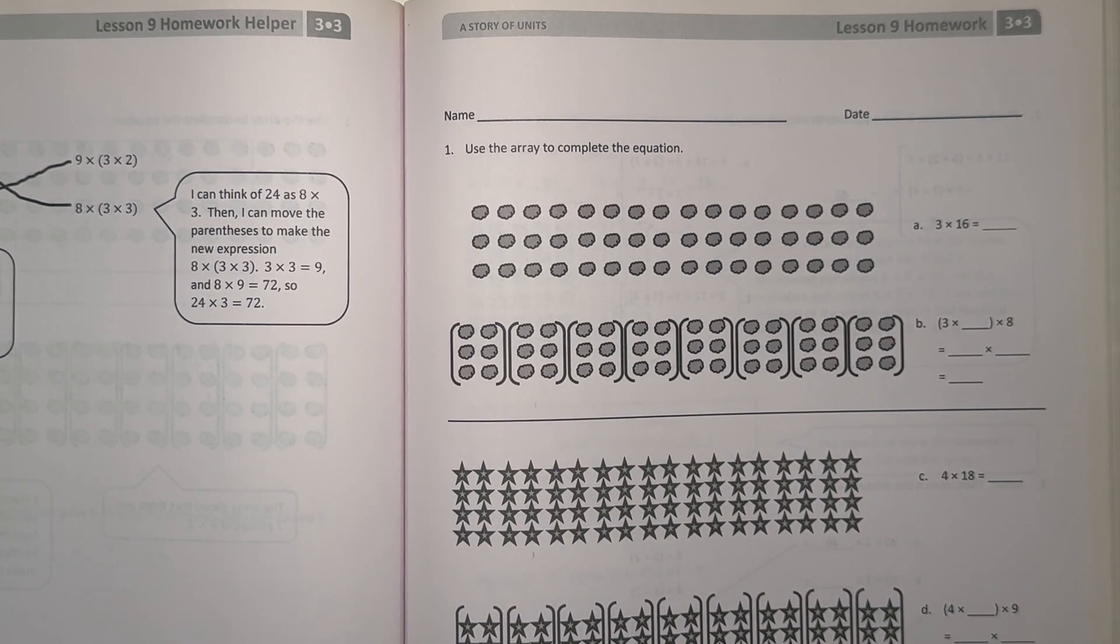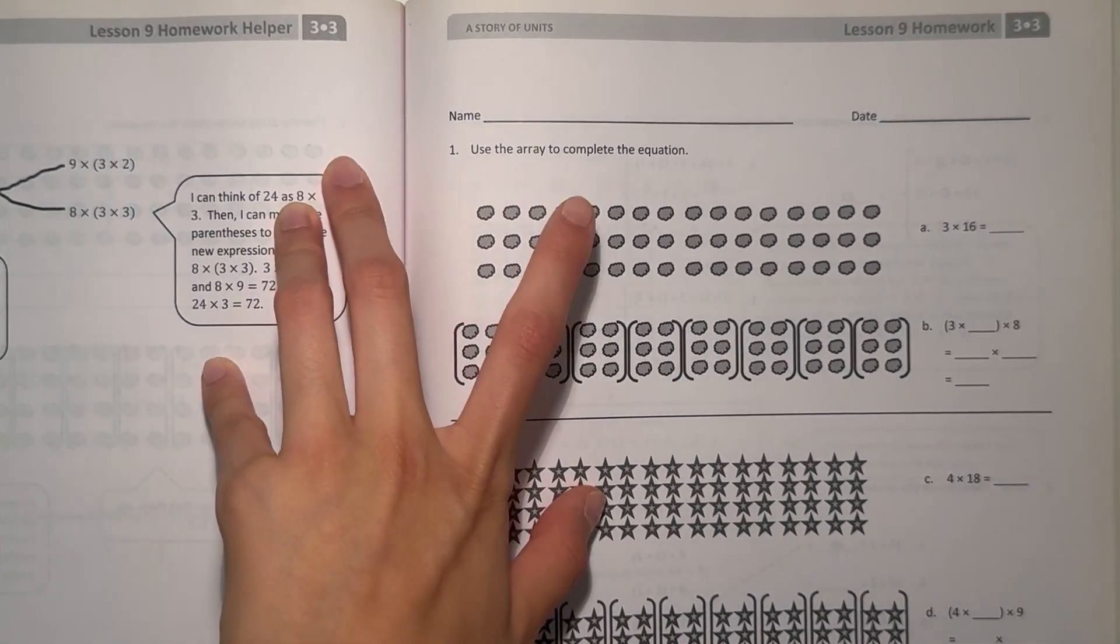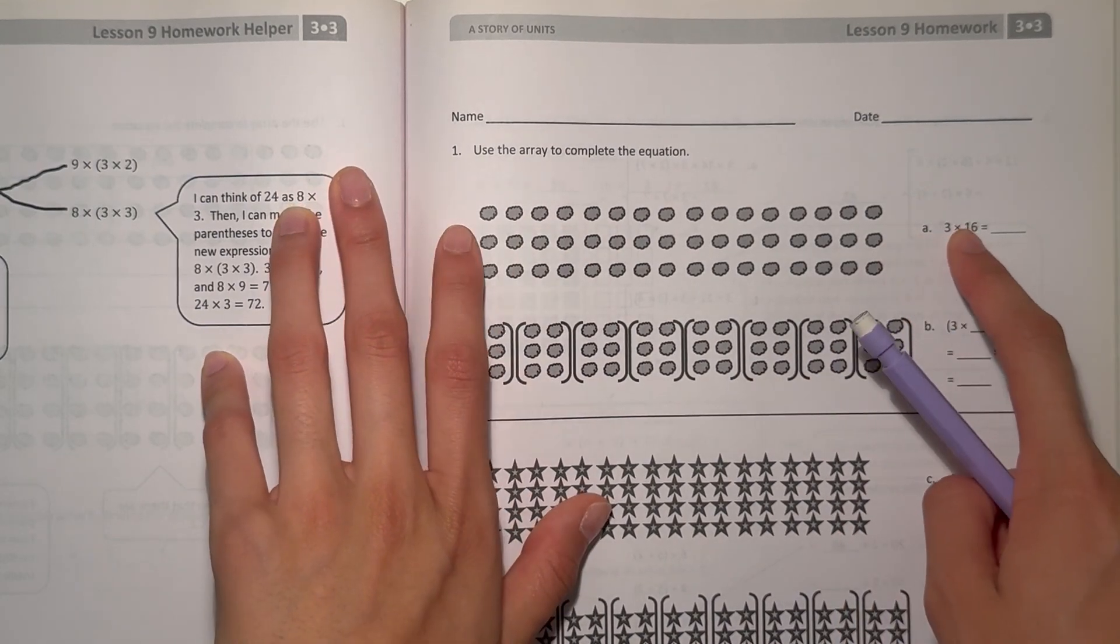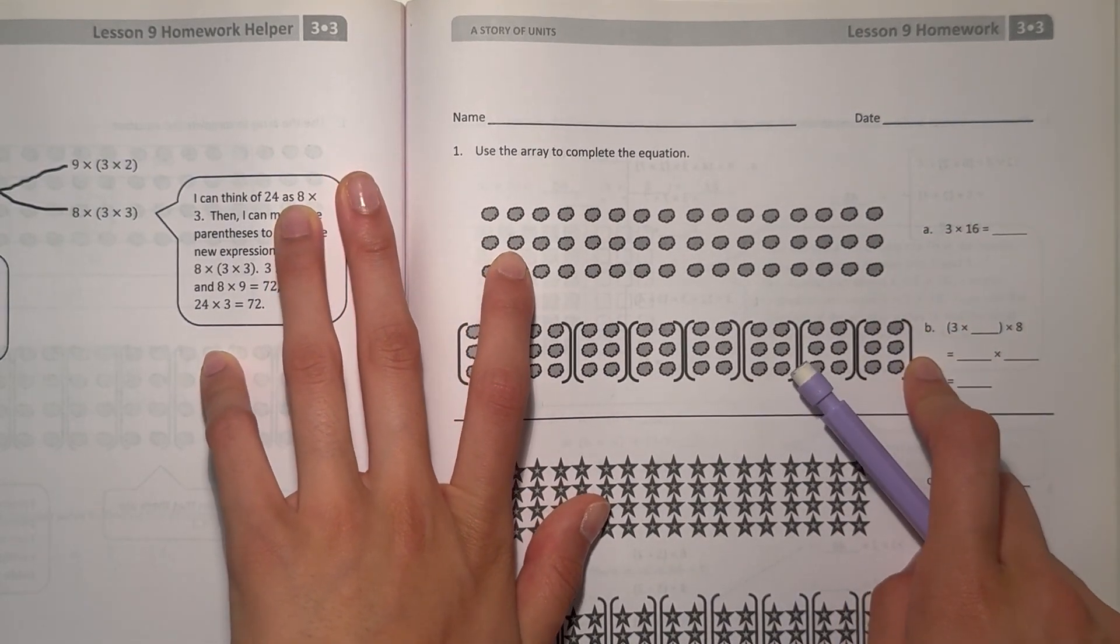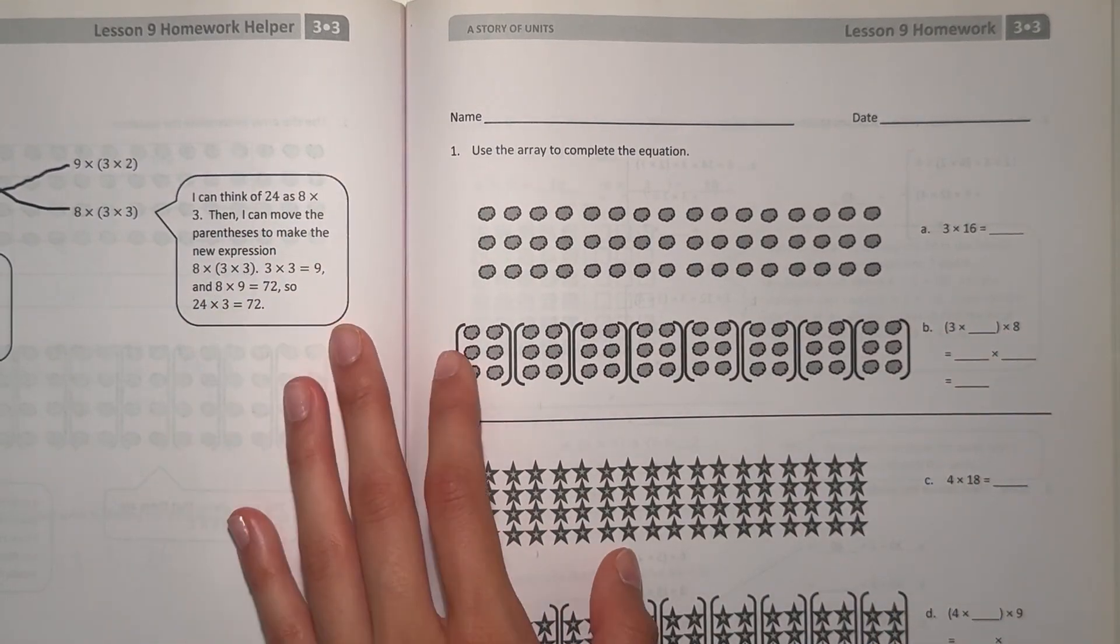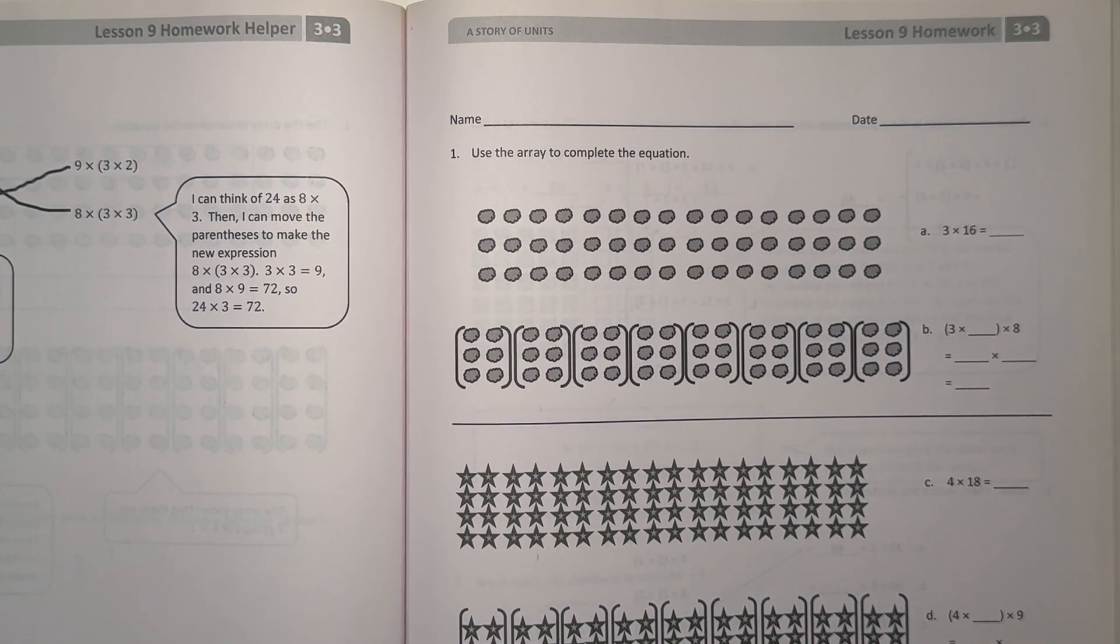Alright, so like I always say, one of the most important things when doing a math problem is understanding the problem itself. So what we're doing is using this array to complete the equation. Okay, so A we have 3 times 16, and then B we have 3 times blank times 8.